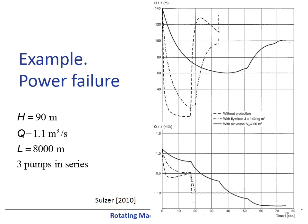This slide shows an example of the evolution of pressure and flow rate because of a power failure. When protective measures are applied, like a flywheel or an air chamber, the effect of water hammer is strongly alleviated.